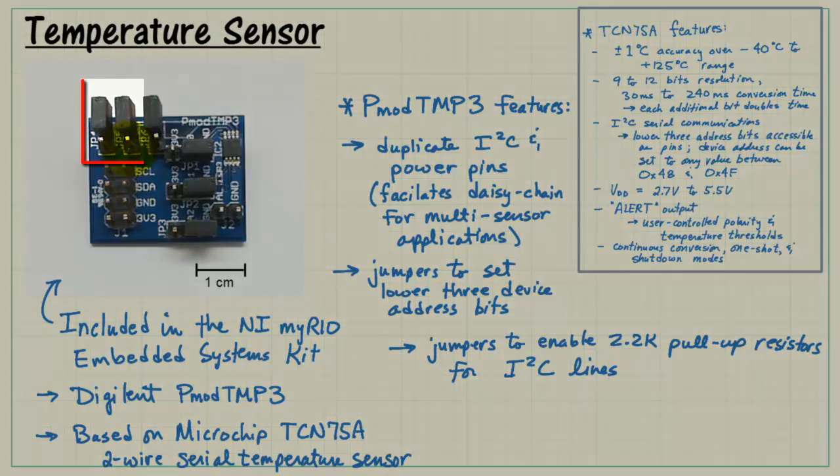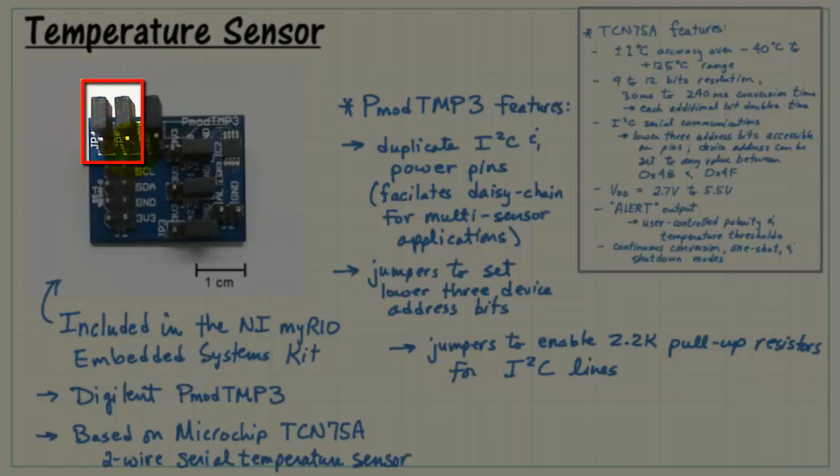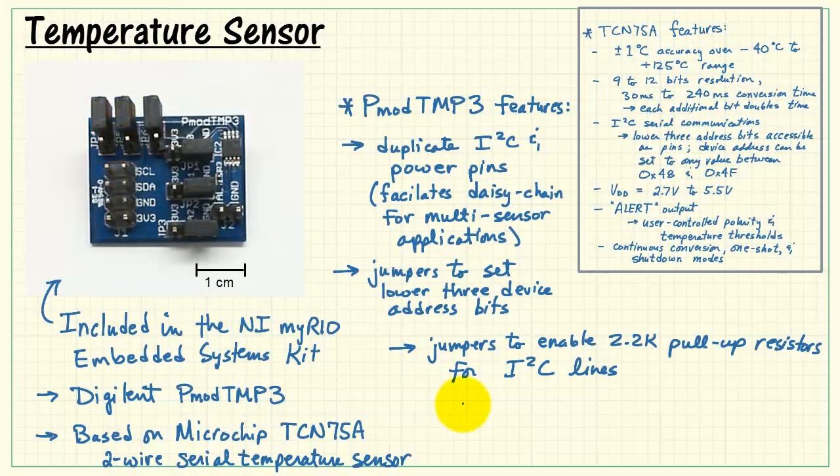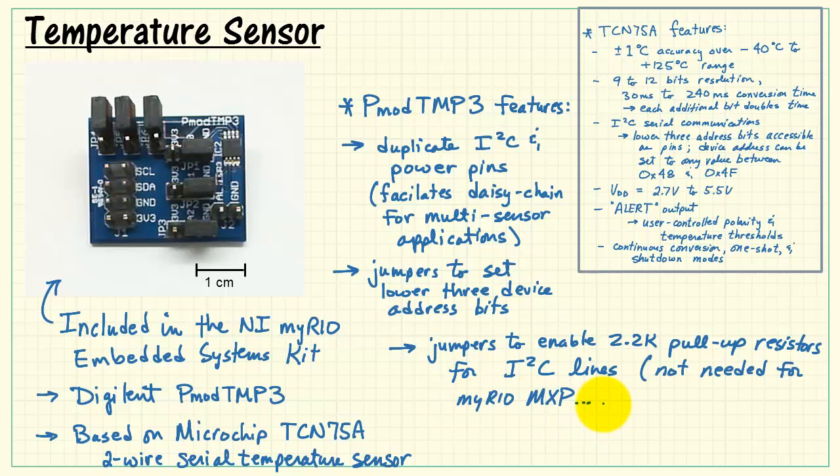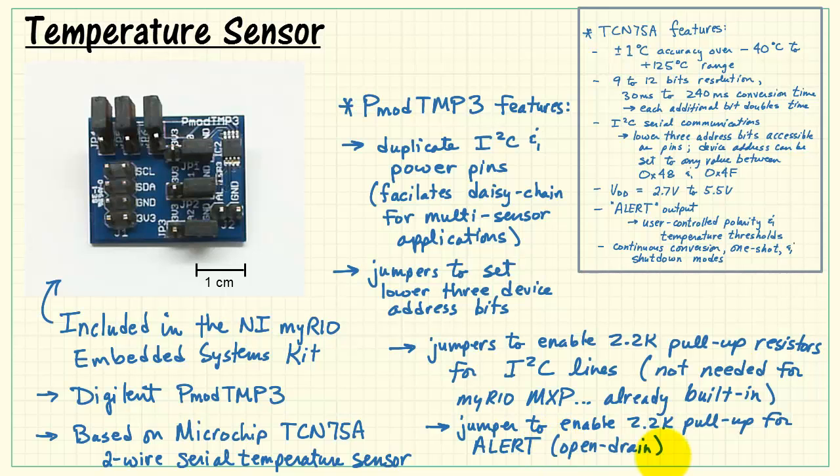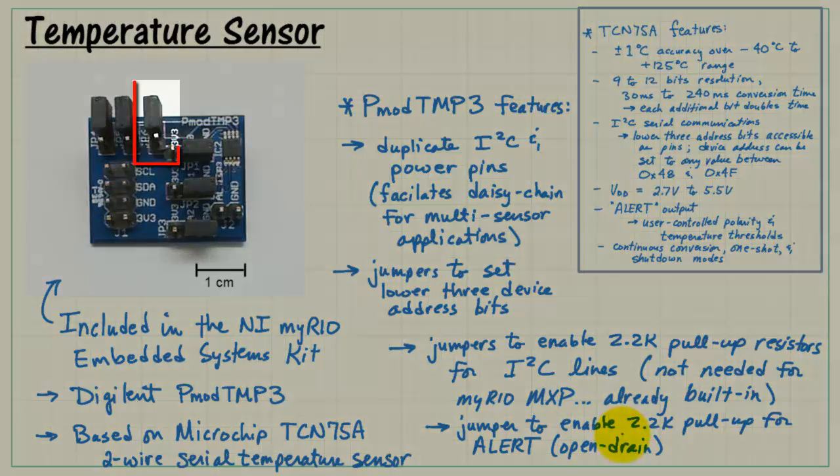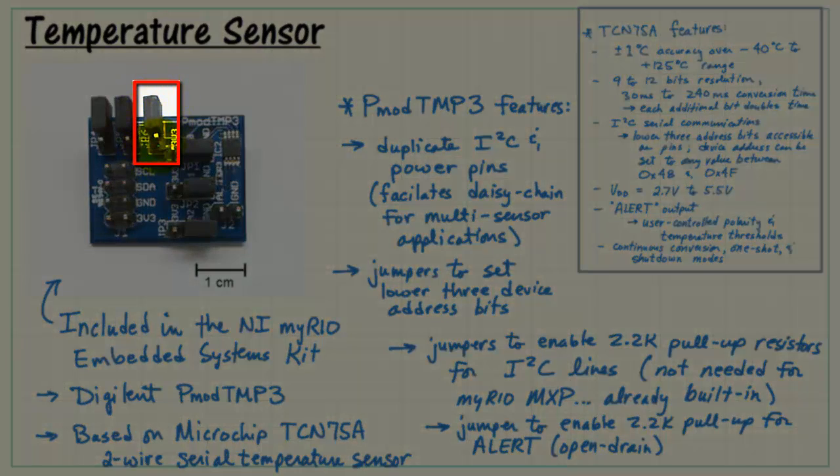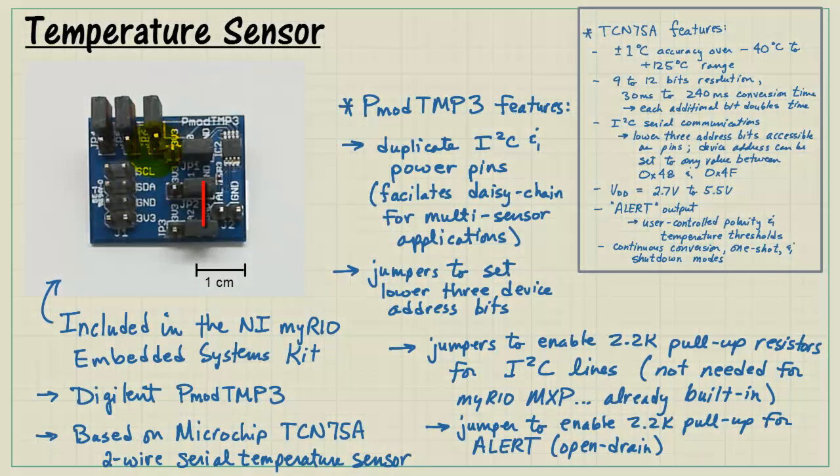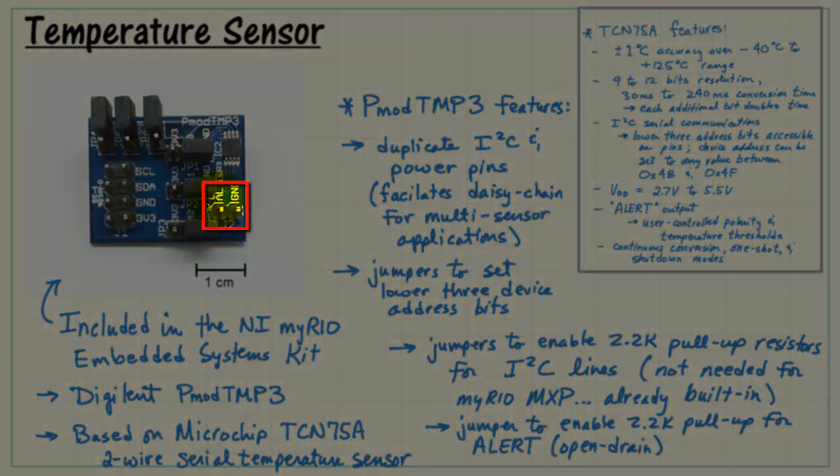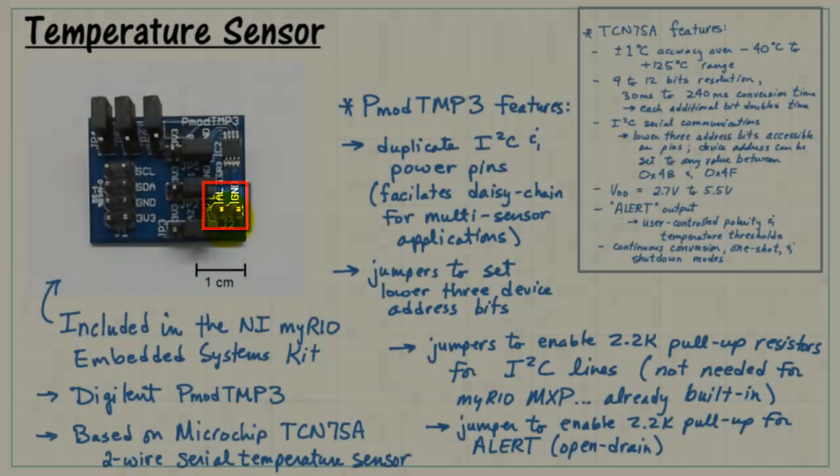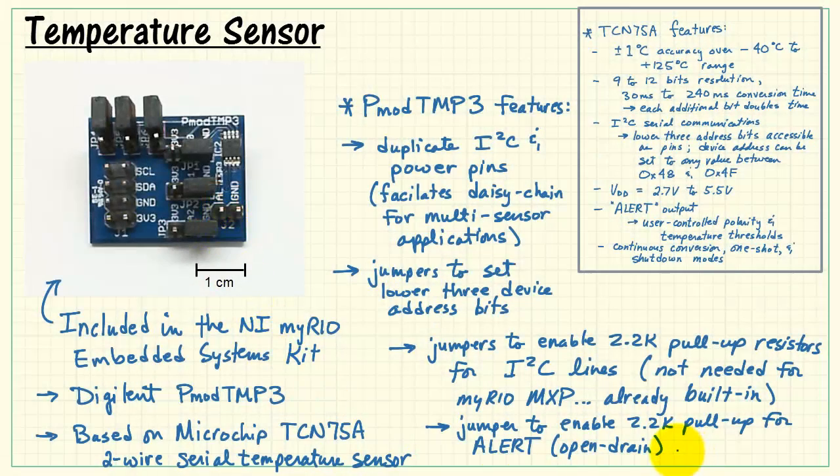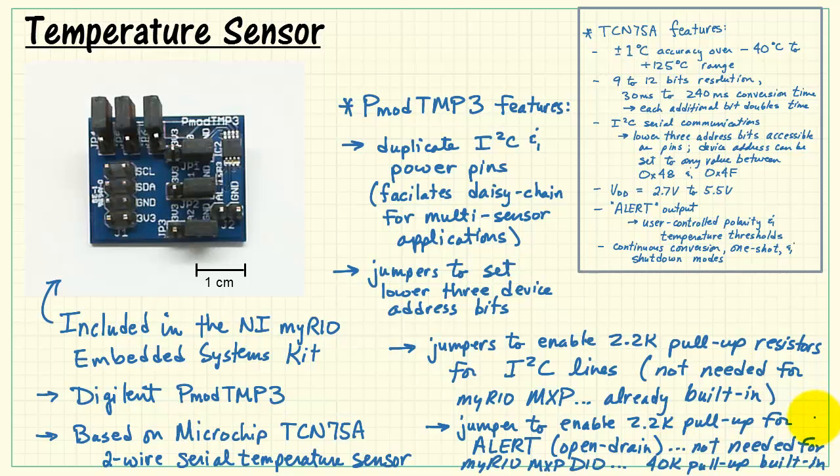We have a pair of jumpers to enable the 2.2K pull-up resistors that are built in for the I2C lines. These jumpers are not required when you are connecting to the MyRIO MXP port because these are already built in for serial clock and serial data lines. We have a single jumper to enable the 2.2K pull-up resistor for the alert output, which is of the open drain style. The alert output itself is located right there, and you have an extra ground pin next door. Note that the MyRIO digital I/O pin already has a 40K pull-up built in.